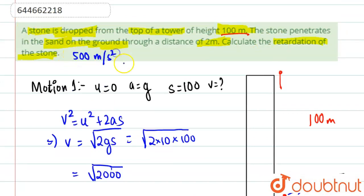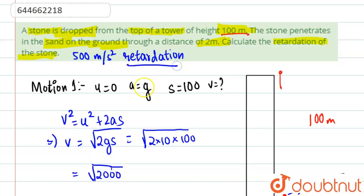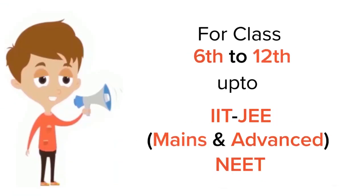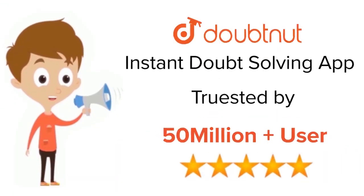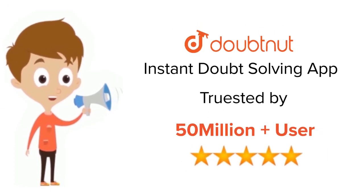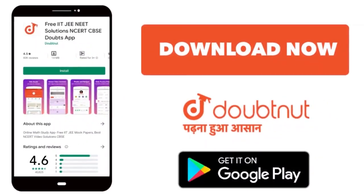Retardation is obviously negative acceleration, which is why we don't write the negative sign separately — retardation already represents negative acceleration. Thank you. For class 6 to 12th, IIT JEE and NEET level, trusted by more than 5 crore students — download DoubtNet today.